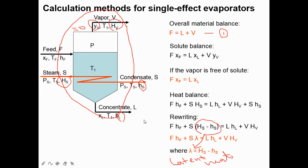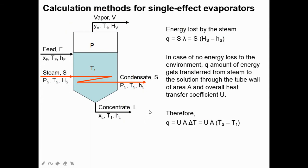The latent heat λ is obtained from the steam table — no difficulty there since most data will be given. The energy loss by steam is Qs = S·λ, where λ = Hs − hs (latent heat from the steam table at the same temperature and pressure). The heat transfer equation is Q = U·A·ΔT, where U is the overall heat transfer coefficient, A is the area, and ΔT is the temperature difference between high and low temperature.